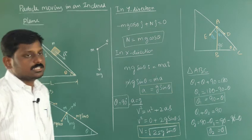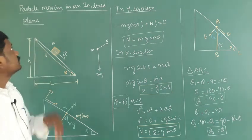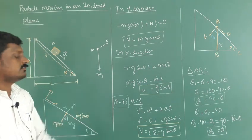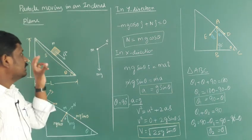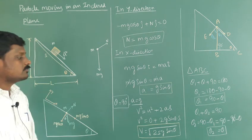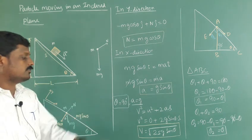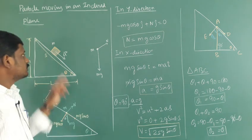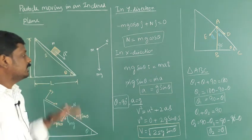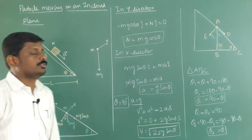In this class we discussed the acceleration of a mass moving on an inclined plane, which is a equal to g sine theta, and the speed of the mass when it reaches the bottom of the inclined plane.